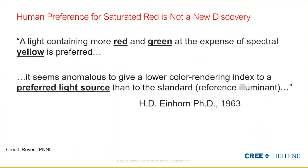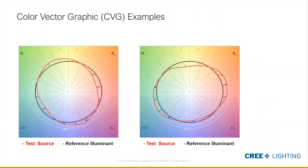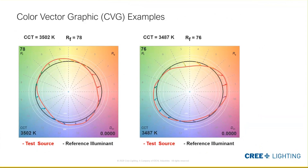A quote from 1963 notes that a light containing red and green at the expense of spectral yellow is preferred — and this has been well known. Looking at two color vector graphics here: one on the right shows high saturation in red, high saturation in green, and desaturation in yellow — almost the exact match to that statement. You might think that would be the preferred light source in any given setting. However, both sources are the same CCT, have roughly the same R_f, and the R_g values are about the same. Absent the color vector graphic showing exactly what's changing within the color gamut areas, you wouldn't know the difference between these two.